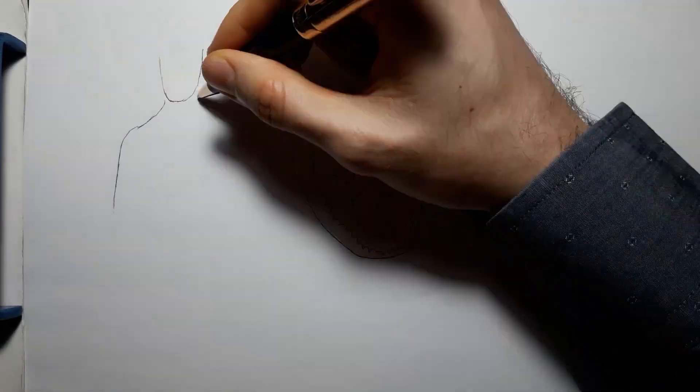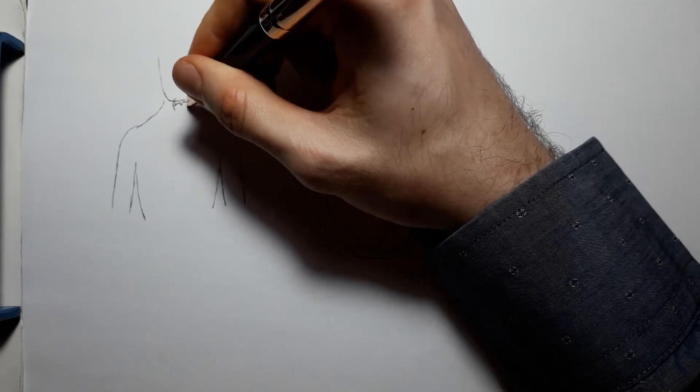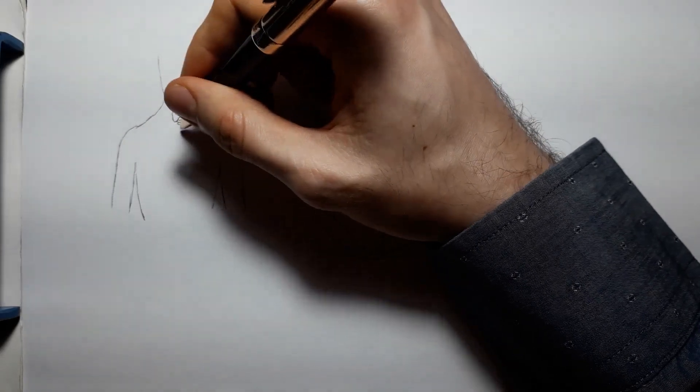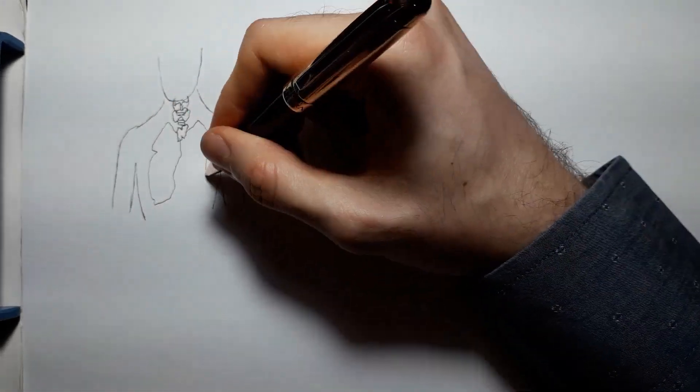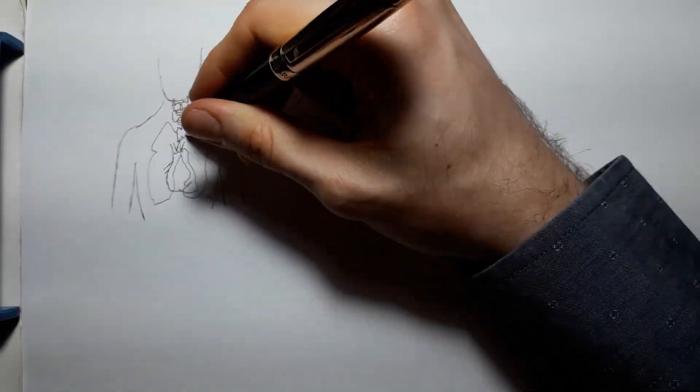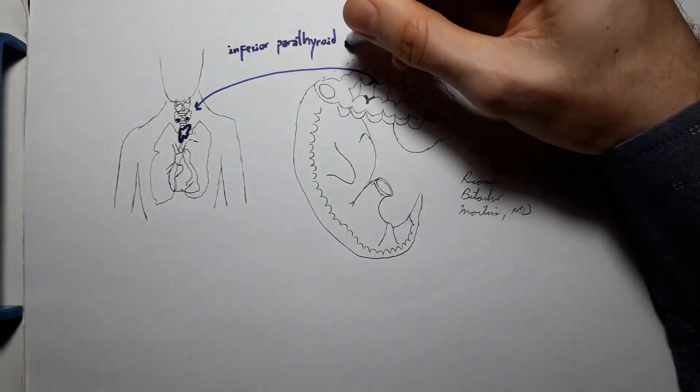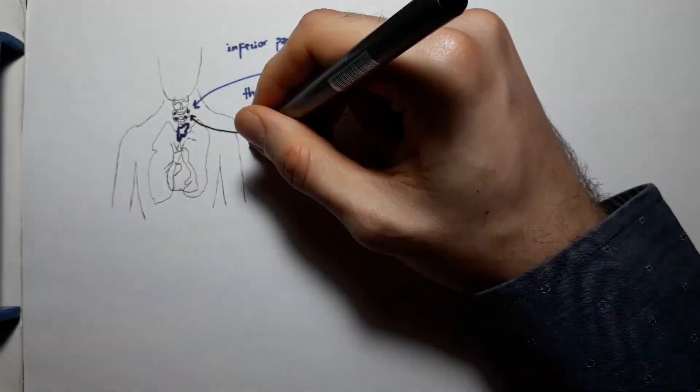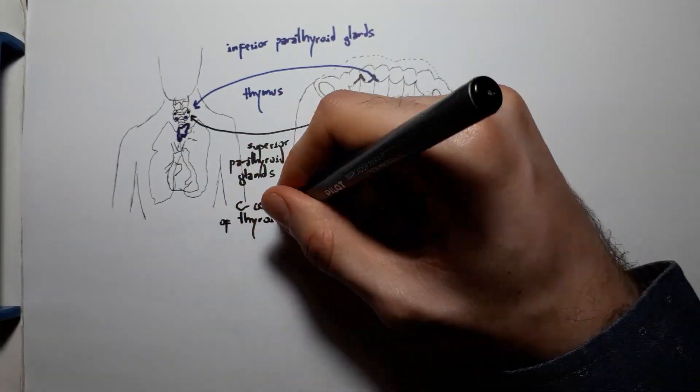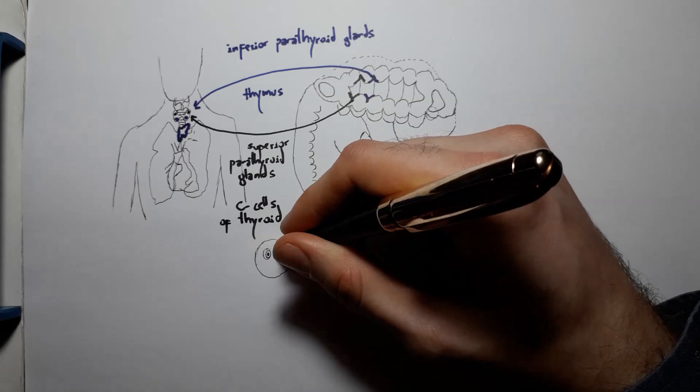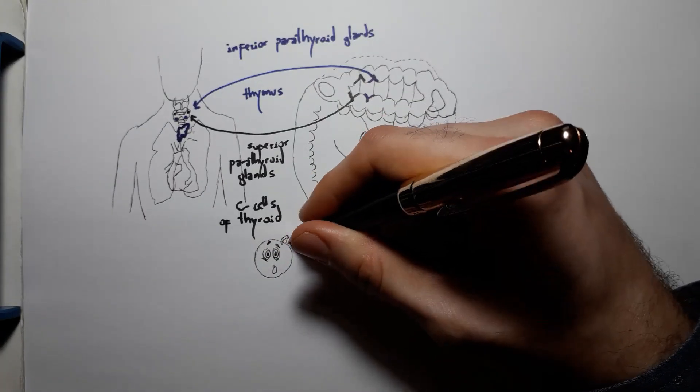The third pharyngeal pouch forms the inferior parathyroid gland and the thymus. The fourth pharyngeal pouch will lead to the formation of the superior parathyroid glands and the C-cells of the thyroid.